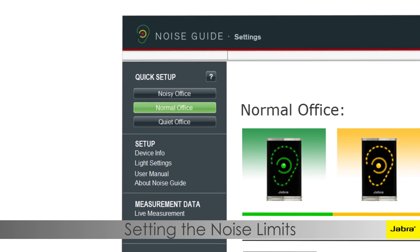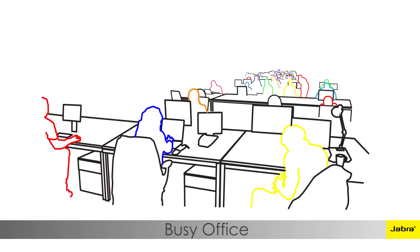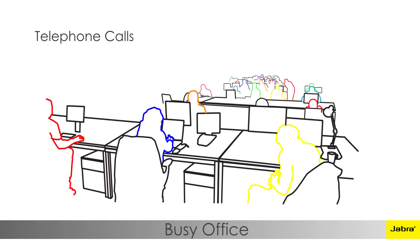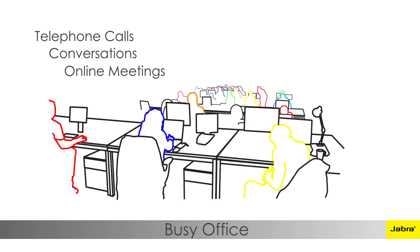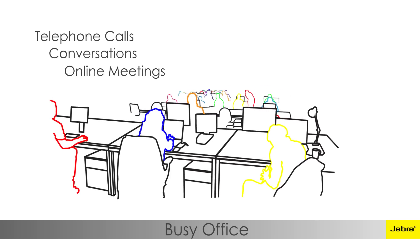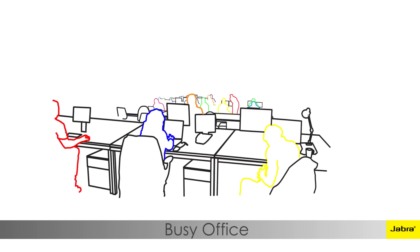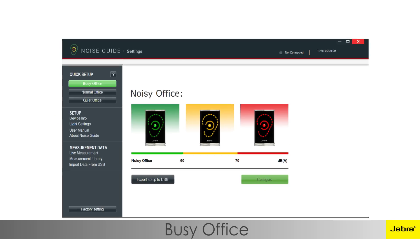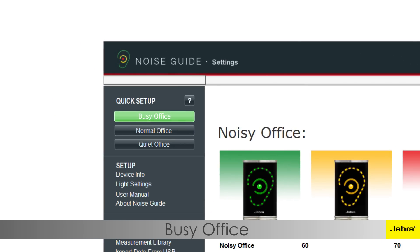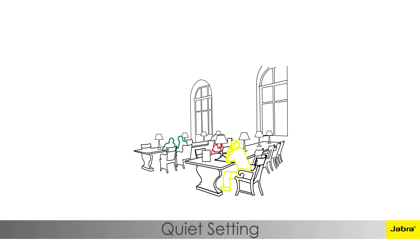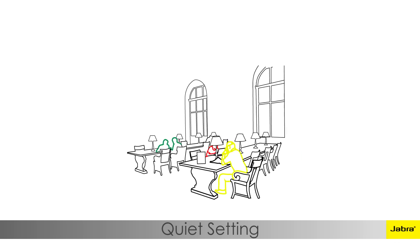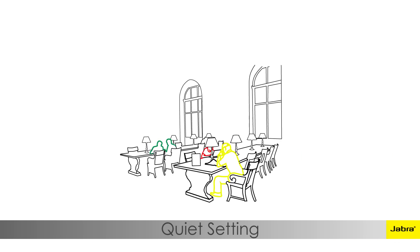In the quick setup menu for the Noise Guide, this corresponds to the normal office setting. In large open space environments where the work may often include telephone calls, conversations with colleagues, and online meetings using headsets, the noise requirement needs to be less strict, as verbal communication is the main part of the job. In this environment, the busy office setting would be recommended, which is also the default setting.